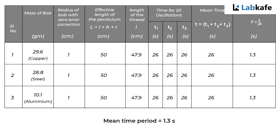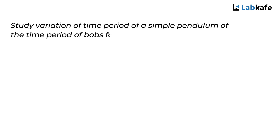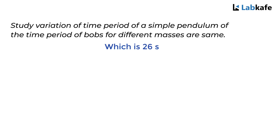Therefore, it can be concluded that for the same value of effective length and acceleration due to gravity, the time period of bobs for different masses are the same, which corresponds to 26 seconds for 20 oscillations.